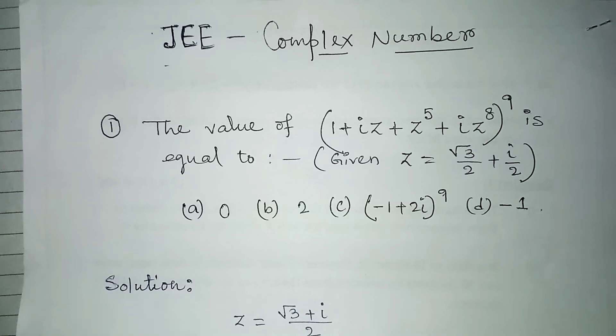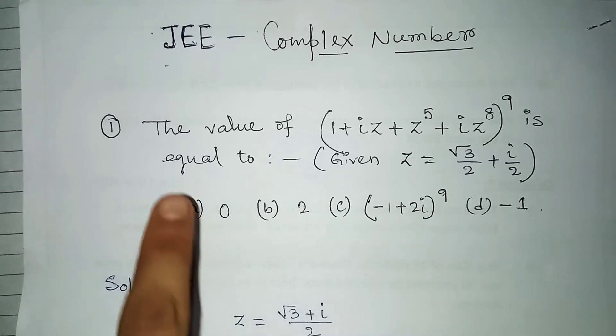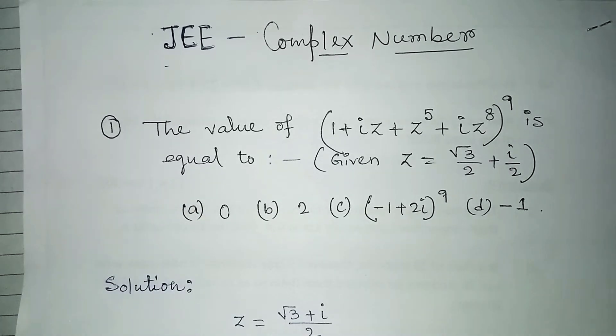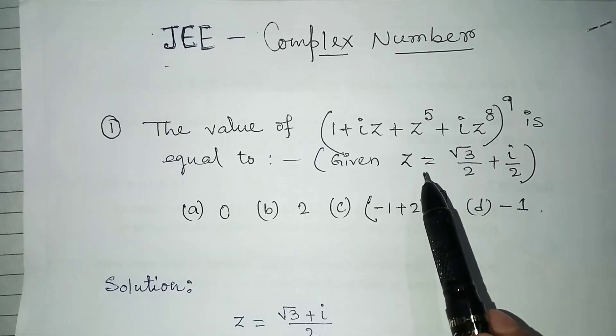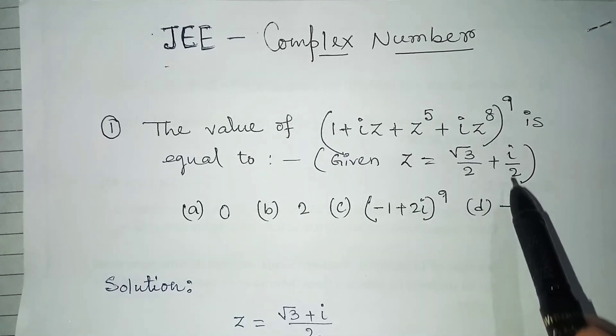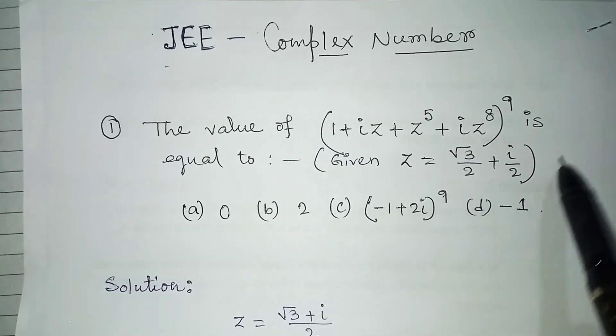Hello students, today we will discuss one question from Joint Entrance Exam which is related to complex numbers. You can see here the value of this one we have to find out, and four options are there. The value of z is given as root three by two plus i by two.